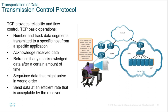TCP uses a timer called the retransmission timeout. When it first sends data, it turns on this timer set to a certain amount of time — for example, five seconds — and it waits for an acknowledgement. If within those five seconds the timer expires and no acknowledgement is received, the data may have been lost or dropped along the way, so the source will retransmit this data. TCP keeps track of which data has not been received using sequence numbers.